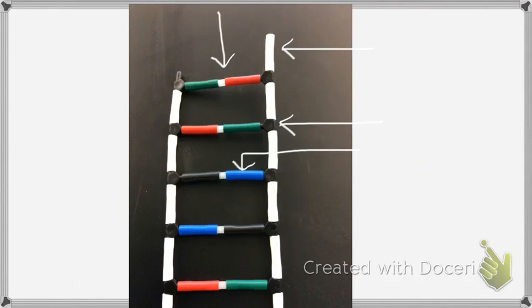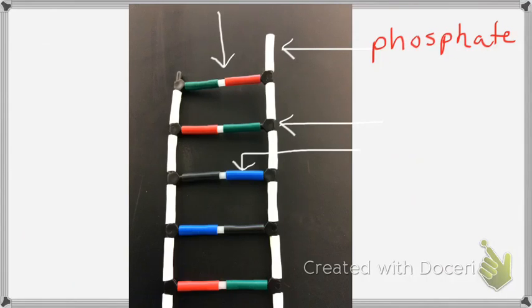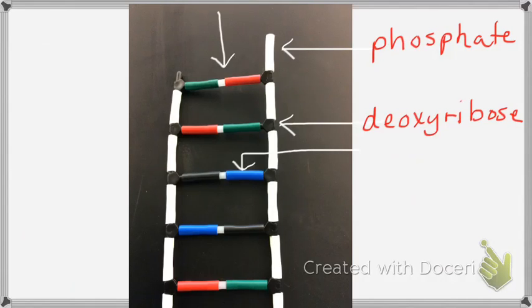Looking at this model: the top white arrow on the white tube is the phosphate. The next white arrow on the black pentagon is deoxyribose — sugar will not be a choice on your test, deoxyribose will be. All of the colored tubes, like the one with the blue arrow, are the bases. If the black base is A, then the blue base would be T. The last arrow shows what holds the two sides together — hydrogen bonds.